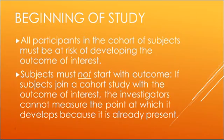At the beginning of the study, all participants have to be at risk of developing the outcome of interest. So if we were interested in uterine cancer, we would have to make sure that we use only females in our study. The subjects cannot have the outcome of interest at the beginning, because then when we follow them forward, it wouldn't make any sense to see whether they end up with it if they already had it.